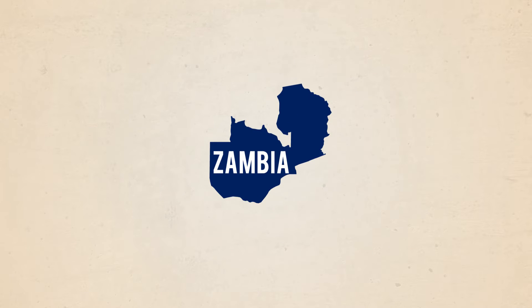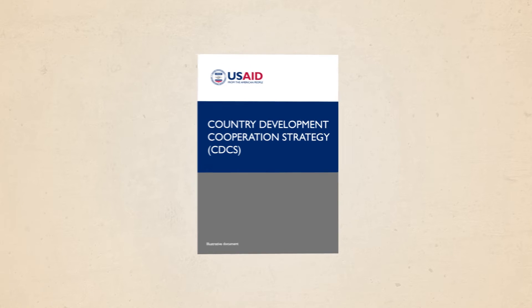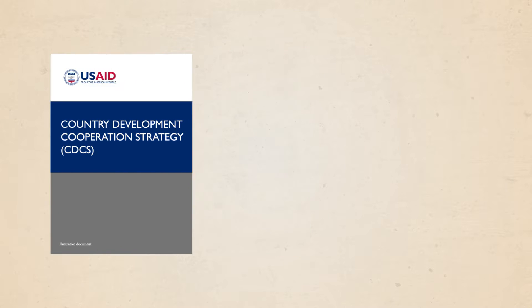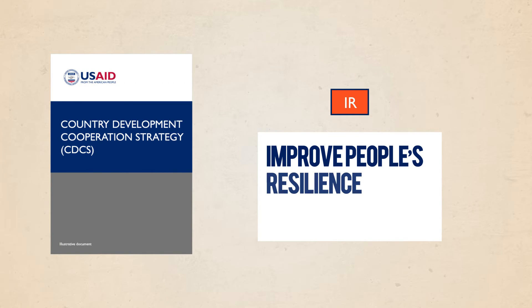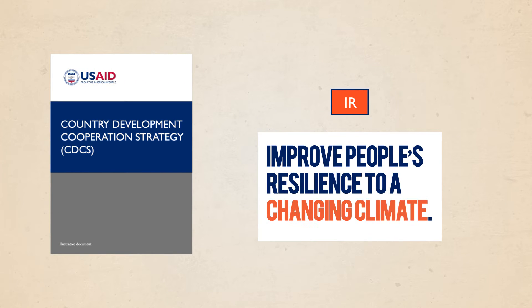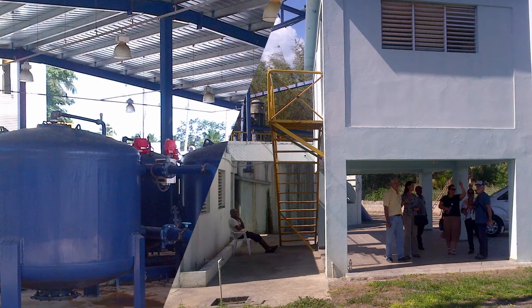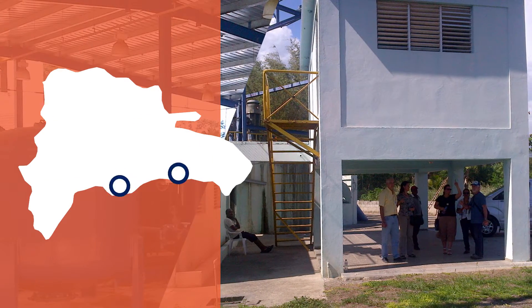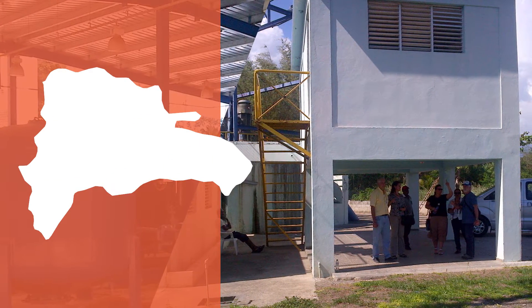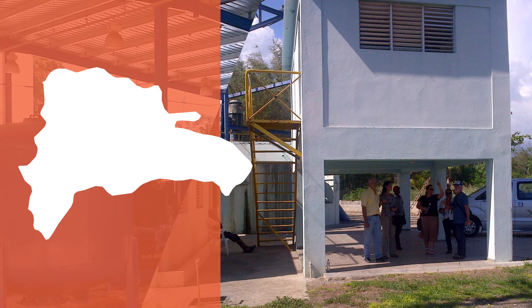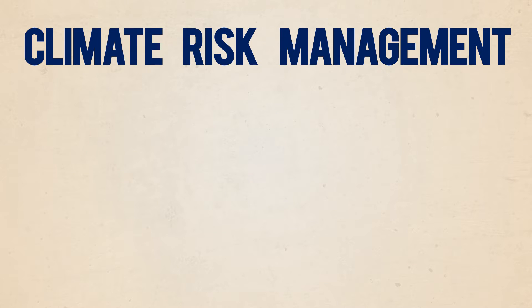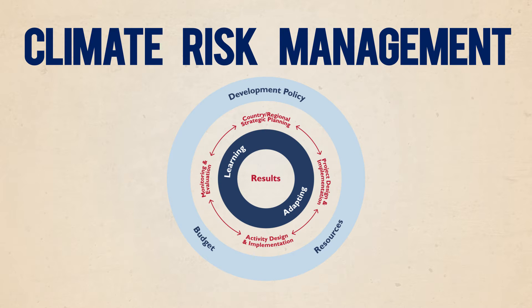In Zambia, the Country Development Cooperation Strategy, or CDCS, seeks to improve the poorest people's resilience to a changing climate. In the Dominican Republic, a USAID-supported activity led to the relocation of new pumping stations for a wastewater treatment plant to safer locations. These are two examples of climate risk management, a process to assess and address climate risks throughout USAID's planning and programming.